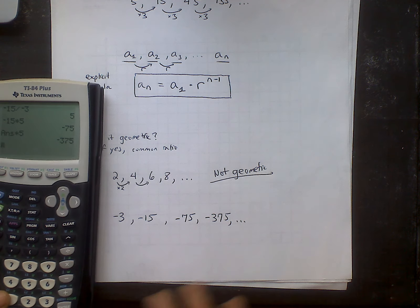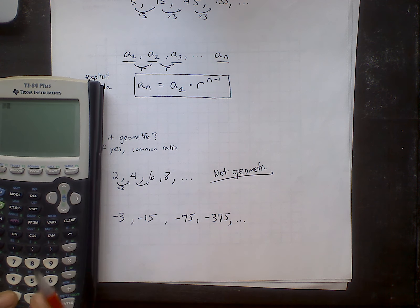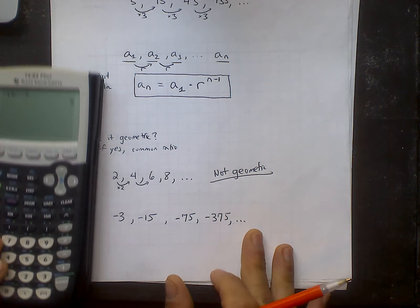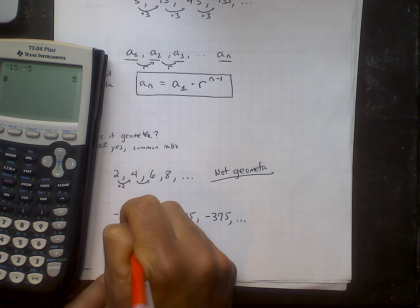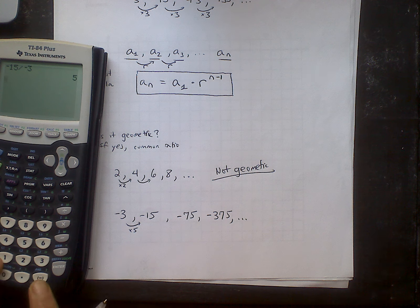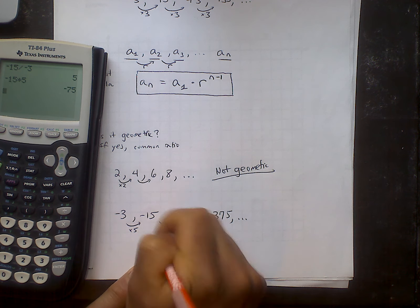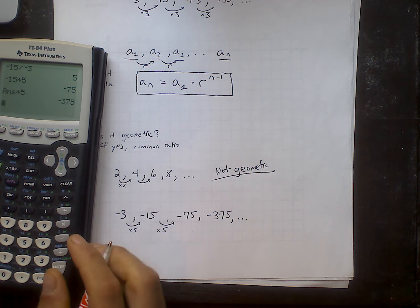But you're going to notice that the ratio is actually going to be positive. Negative 15 divided by negative three gives me a multiplier of five. Now I can check to see if that is the same multiplier to get to the next term. The second term is negative 15 times five again. Does bring me to the next term, negative 75 times five again, negative 375, and so forth.